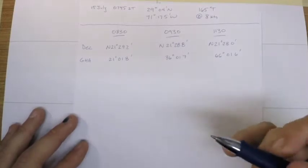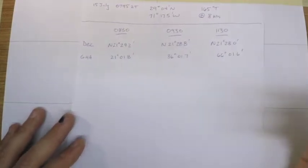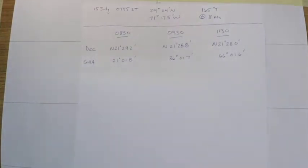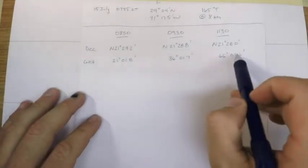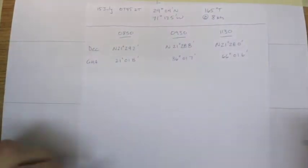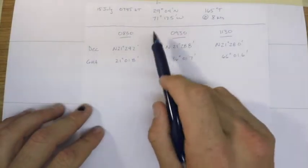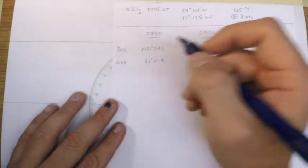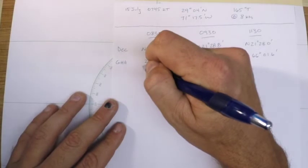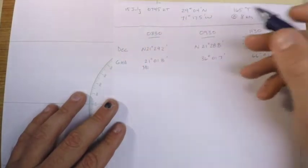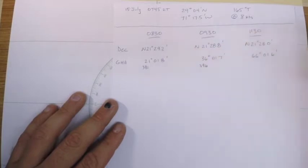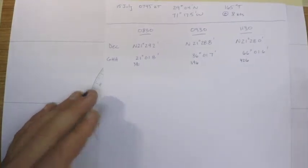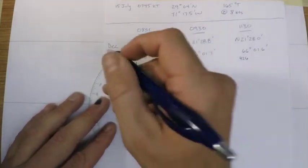Based on the given information, the next step in order to get LHA and then to be able to use HO 229 would be to assume a longitude so that when we do the subtraction we'll end up with a whole value of LHA. Now unfortunately these were morning sights, so the first thing that I would do in this case is add 360 degrees to each of these GHAs because our longitude is to the west of them. So if we add 360 degrees it would be 381, 396, and 426 degrees.